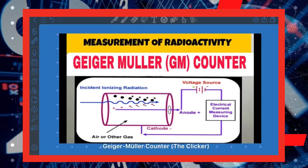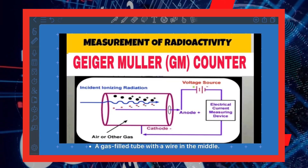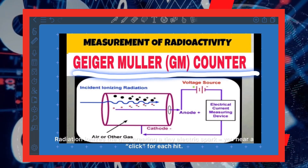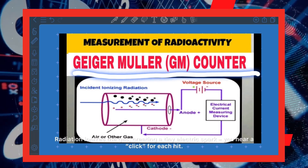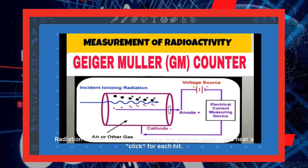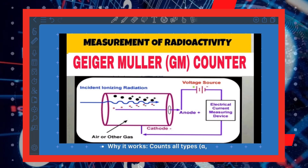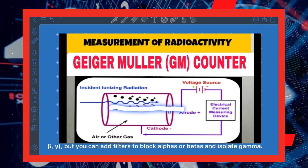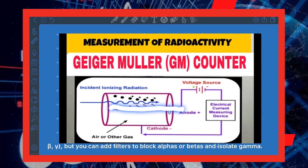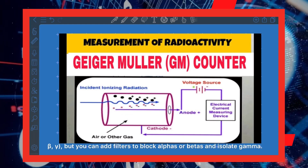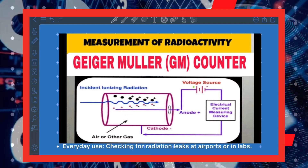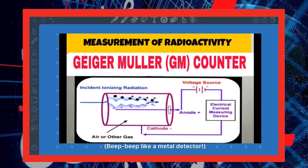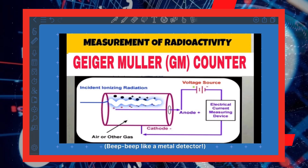The Geiger-Müller counter — the clicker. It is a gas-filled tube with a wire in the middle. Radiation ionizes the gas, creating a tiny electric spark, and you hear a click for each hit. It counts all types — alpha, beta, and gamma — but you can add filters to block alphas or betas and isolate gamma. Used every day for checking radiation leaks at airports or in labs — beep beep, like a metal detector.